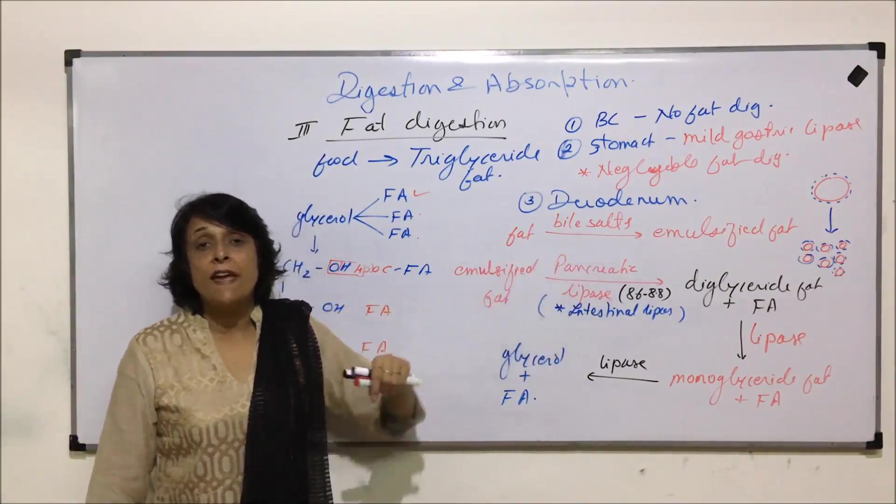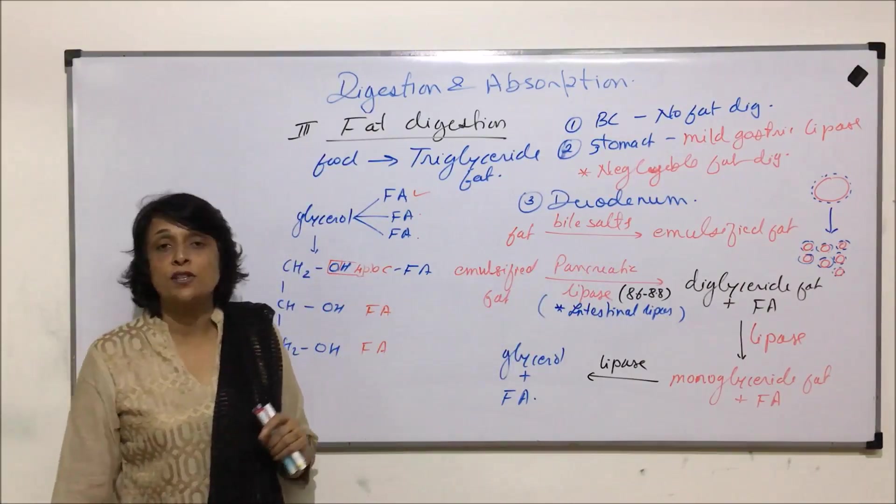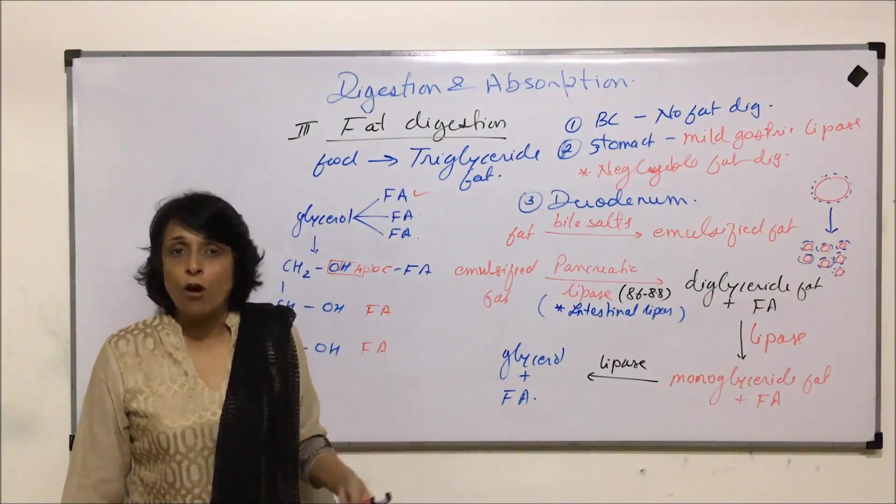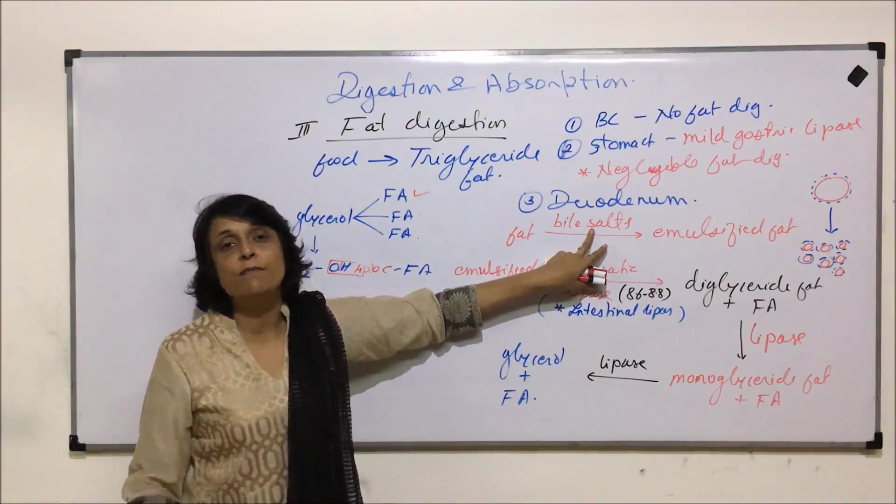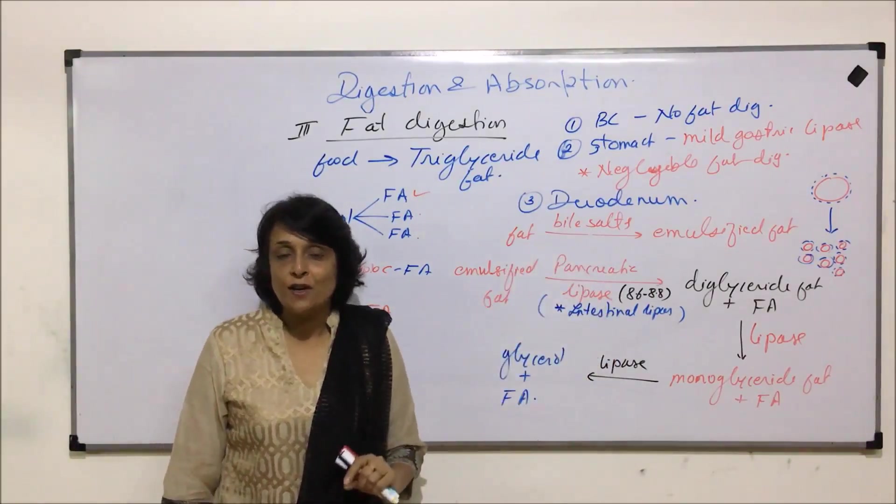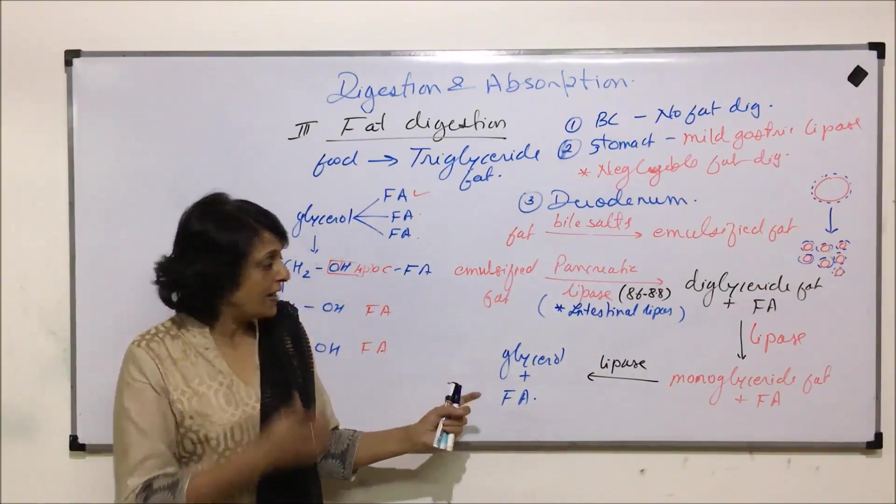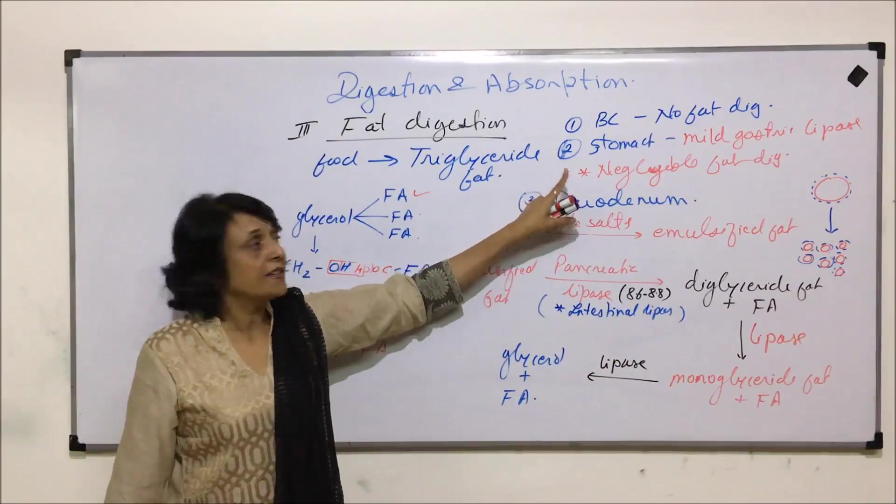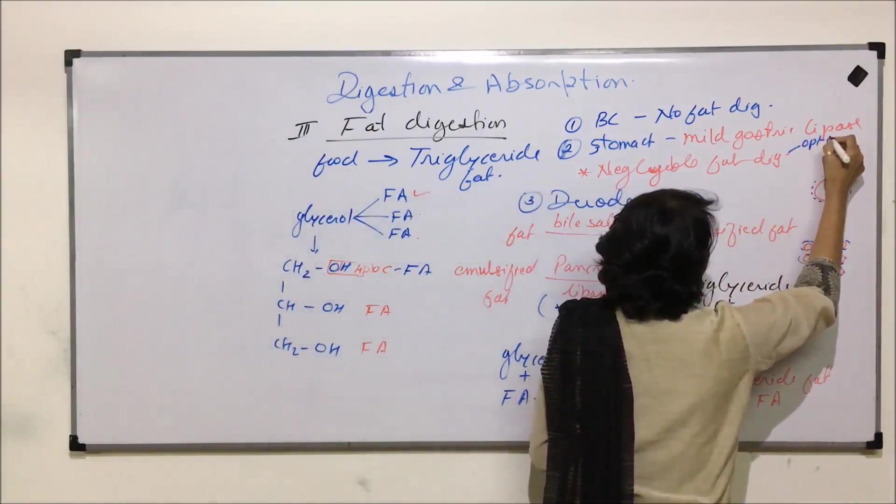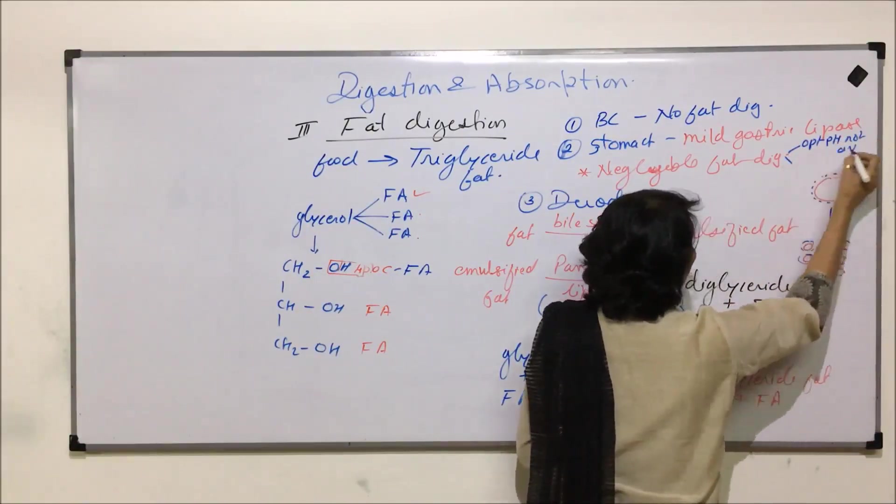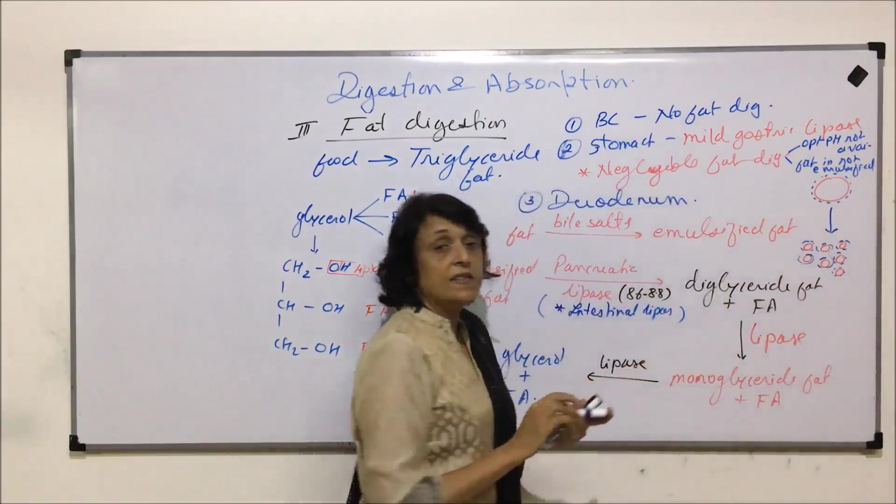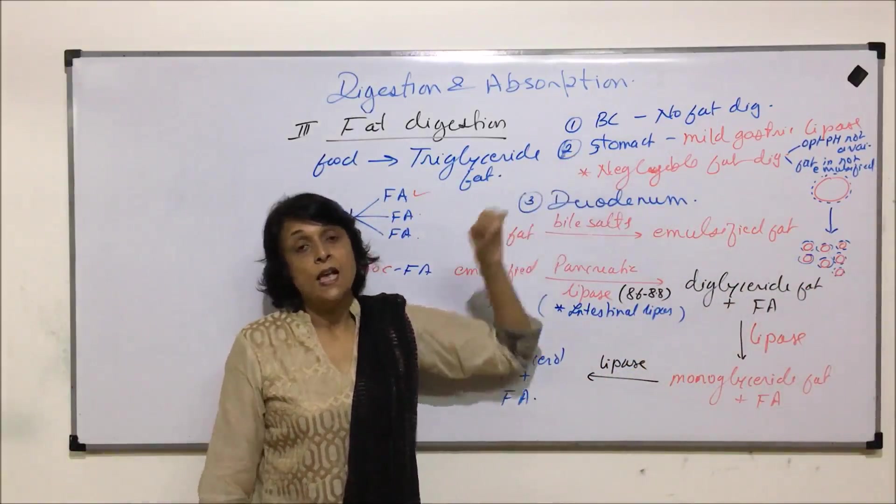With this, fat digestion gets completed. But for that, bile salts play a very significant role, because unless emulsification is done, fat digestion would get affected. That is why when a person gets infection of liver, something like jaundice, when bile production gets affected and bile salts are not produced properly, in those patients fat digestion becomes difficult because the fat doesn't get emulsified. In stomach we have written that there is a lipase, but it does not work efficiently as optimum pH is not available, and secondly, fat is not emulsified. So both these reasons add up and negligible digestion takes place.